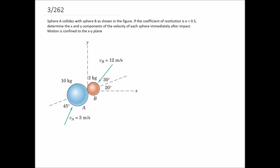For an oblique impact it's important to identify the normal and the tangential direction. The tangential direction goes tangent to where the balls contact — I'll call this t — and the normal direction is 90 degrees to that, drawn in line with the dotted line already given in the figure. So those are our n and t directions.